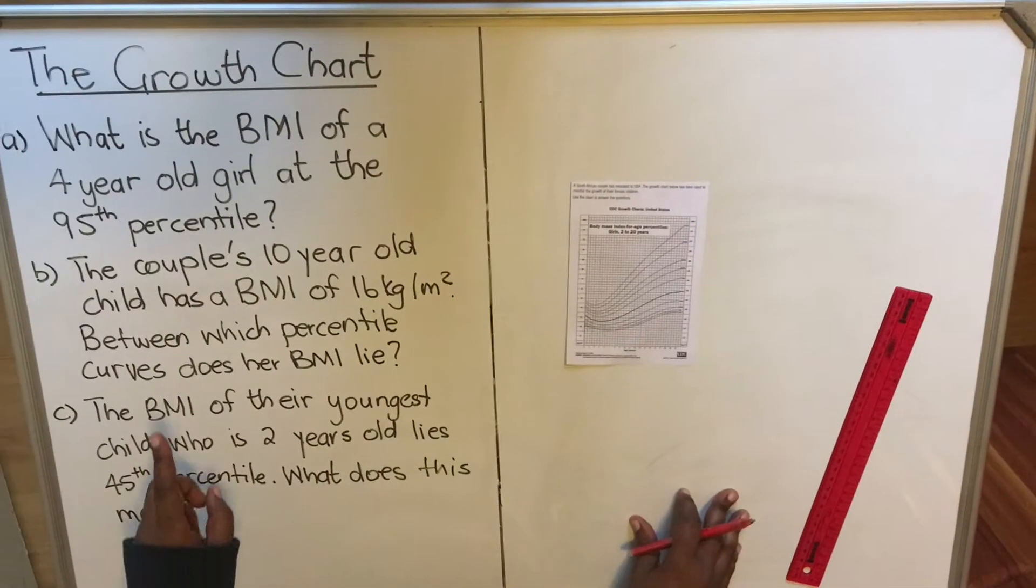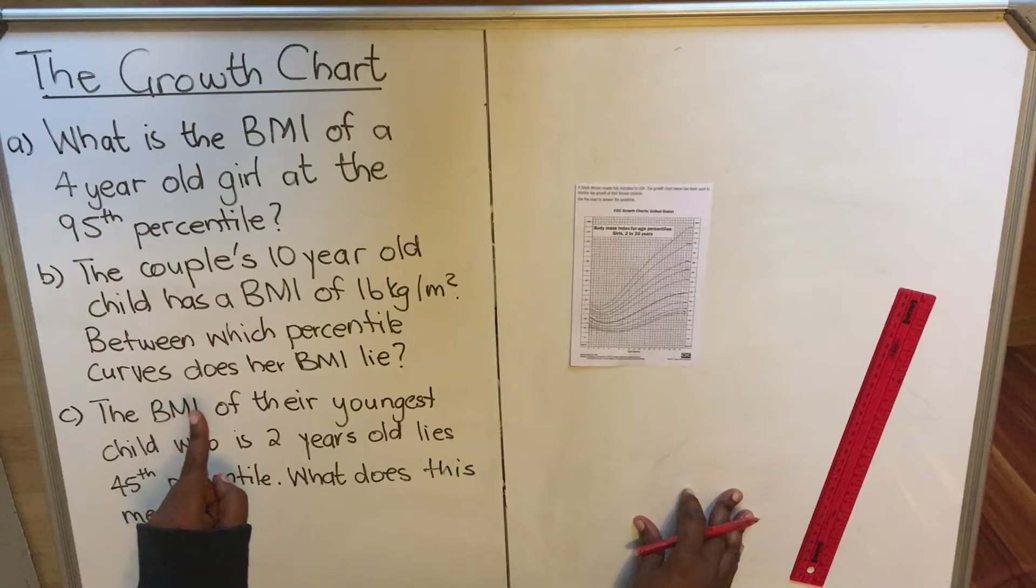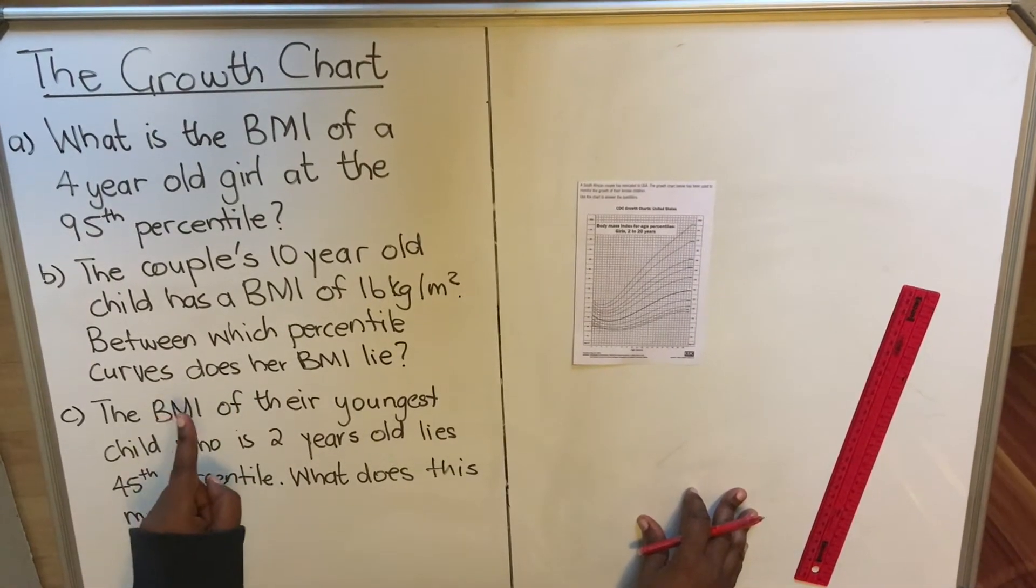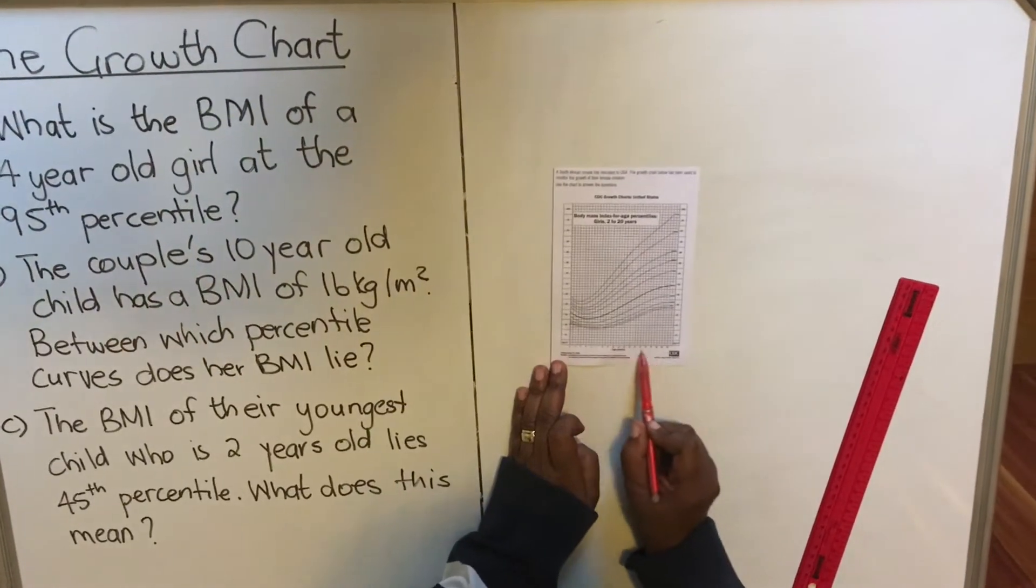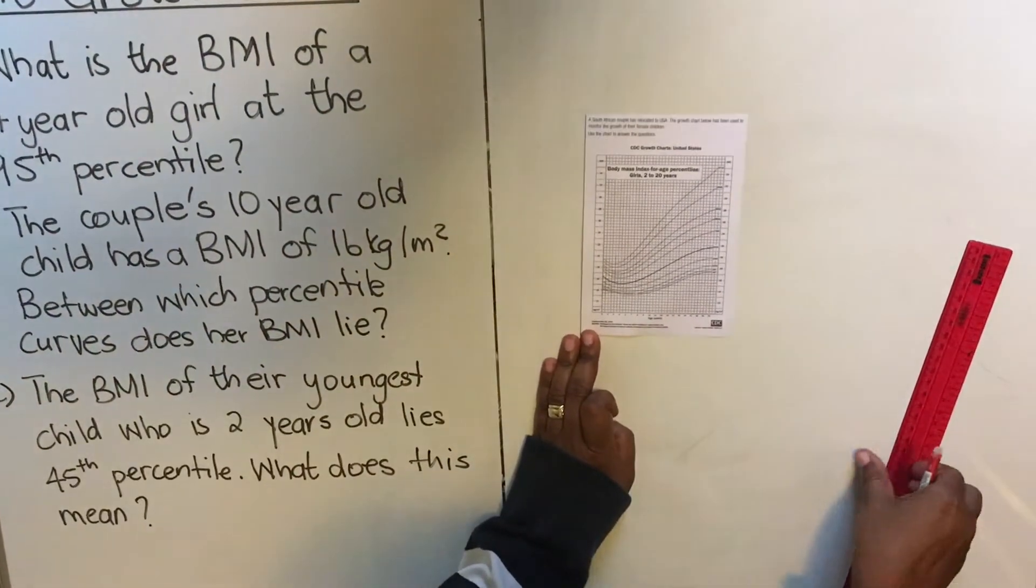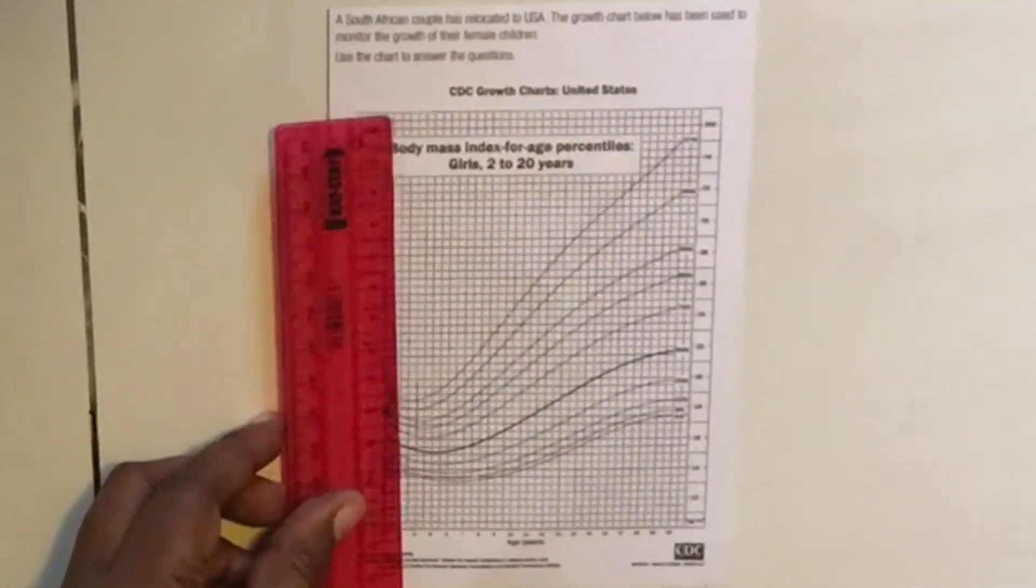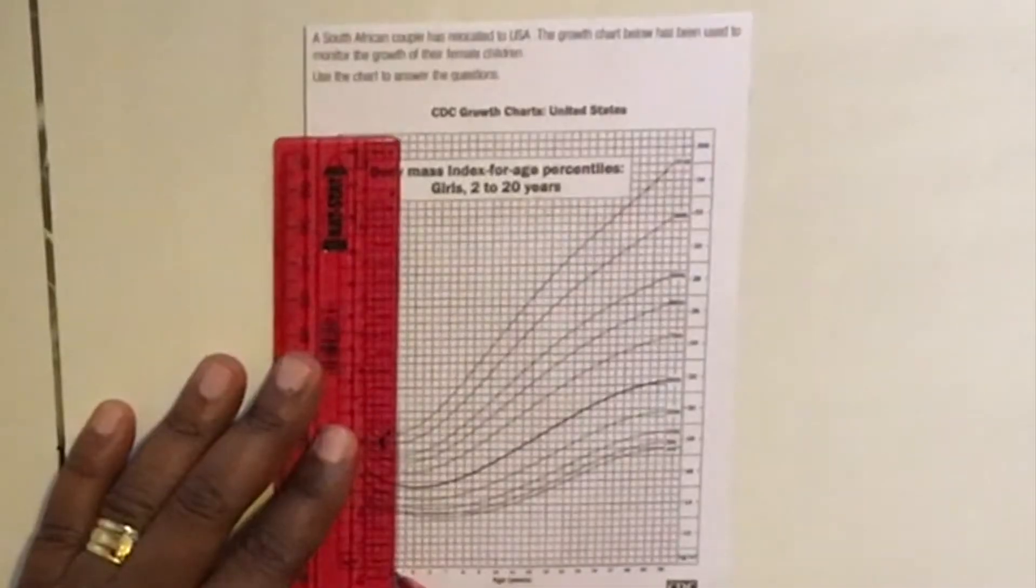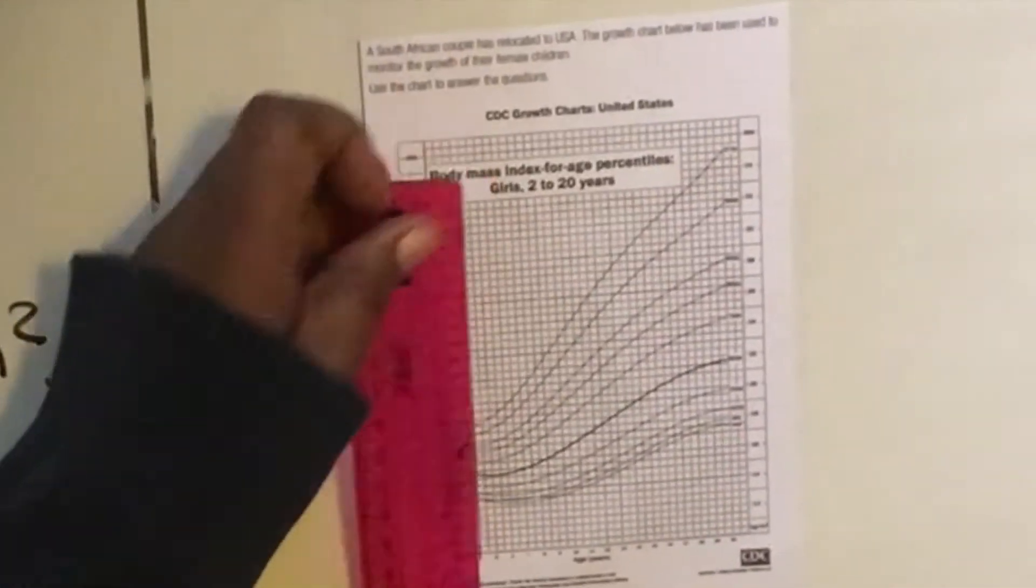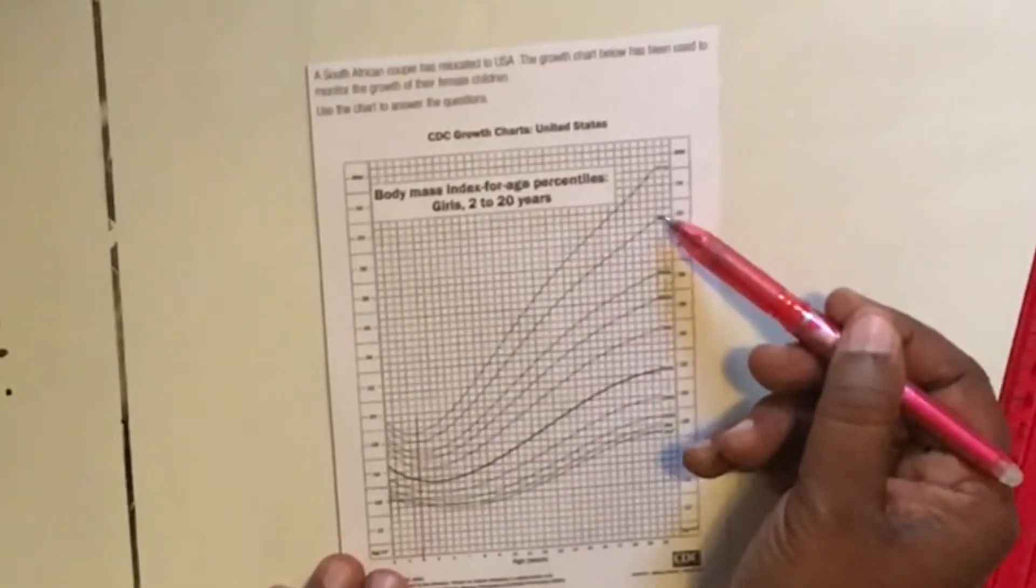Now let's look at the first question. This question says, what is the body mass index BMI of a four-year-old girl at the 95th percentile? Remember the age is at the bottom. So you look for four-year-old, you take a ruler, you go to four, and then you draw a line across like that.